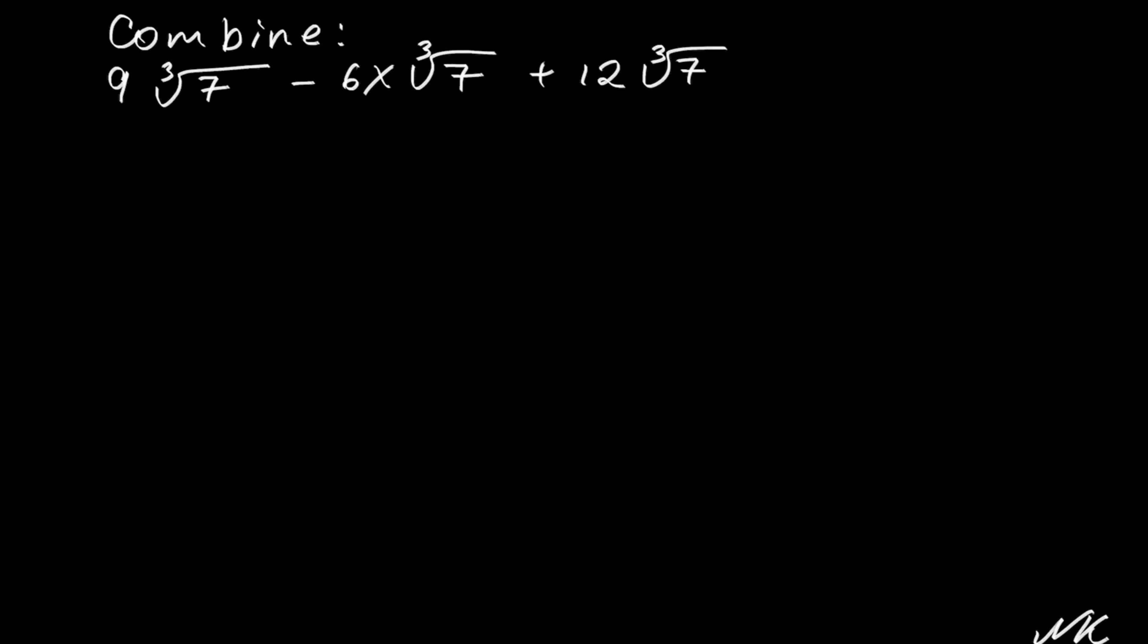When it comes to combining radical expressions, we are treating them as like terms, meaning we have to have the same things to the same exponents with the same variables. So in this example, we have like terms of cube root of 7 in common.